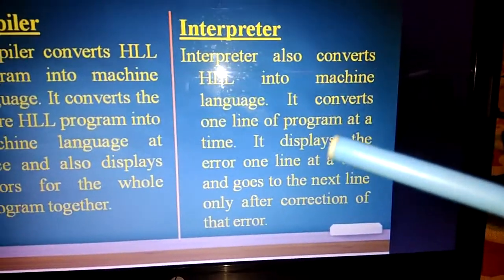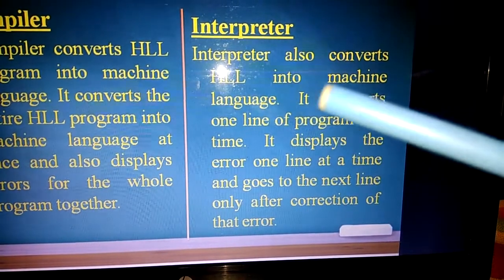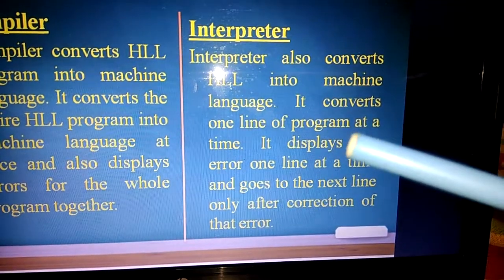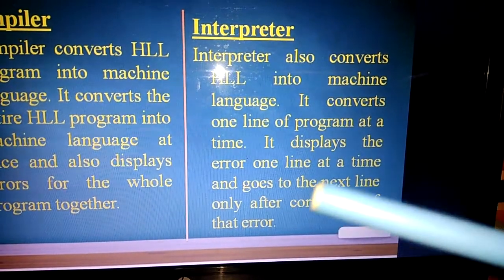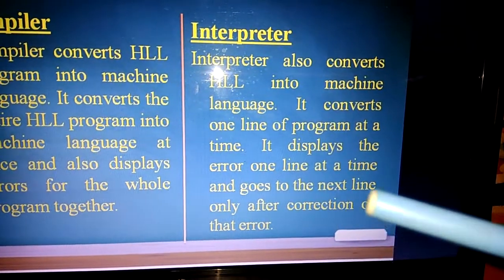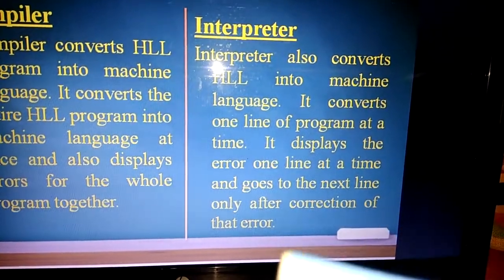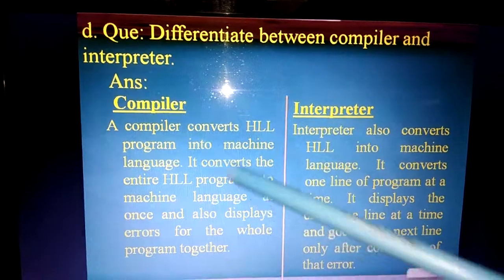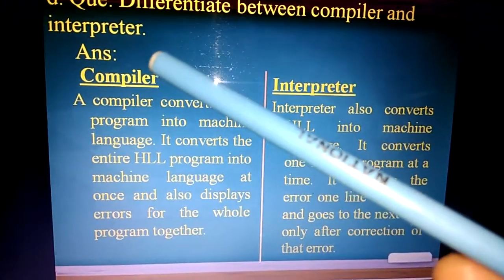An interpreter also converts high-level language into machine language, but it converts one line of the program at a time. It displays the error one line at a time and goes to the next line only after correction of that error. This is the answer for question D.